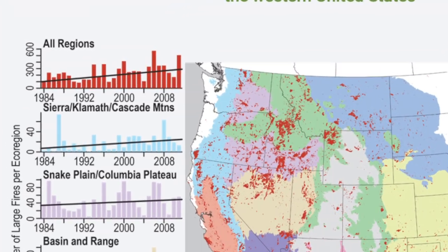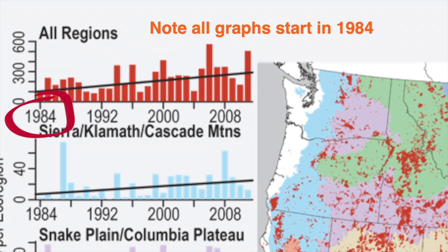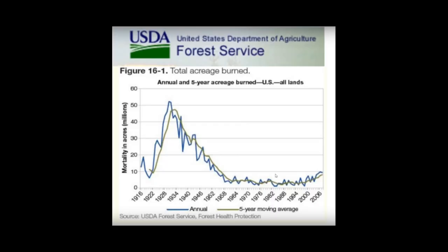For another example, let's take wildfires in the USA. Look at the all-regions graph — it's terrible. Growing wildfires, blamed on climate change. But if you don't start at that low 1984 figure for wildfires and look at the full history of wildfires in the USA, this is what you get: over 10 or 15 times the amount of acreage lost when CO2 levels were super low.